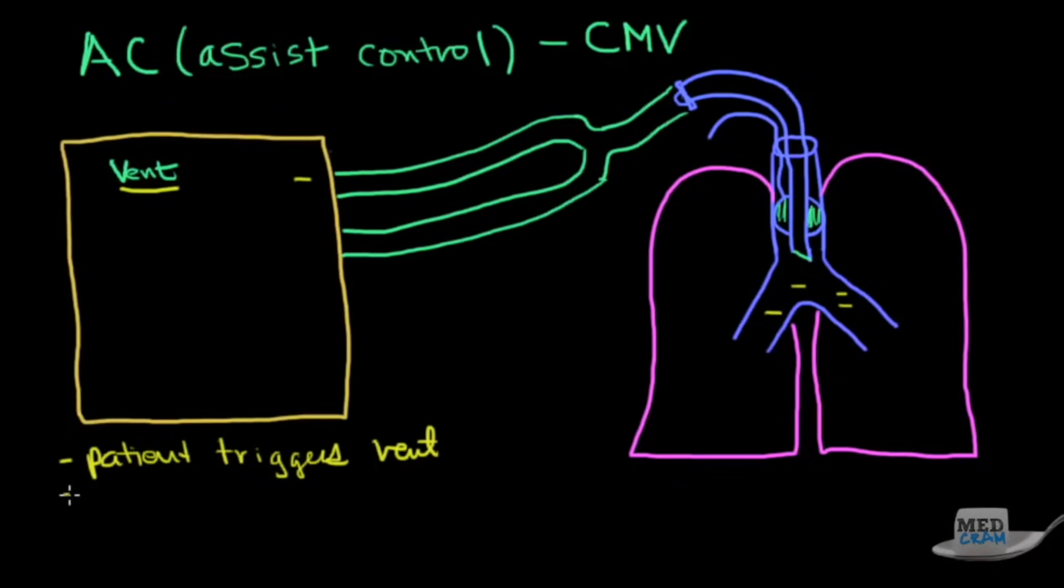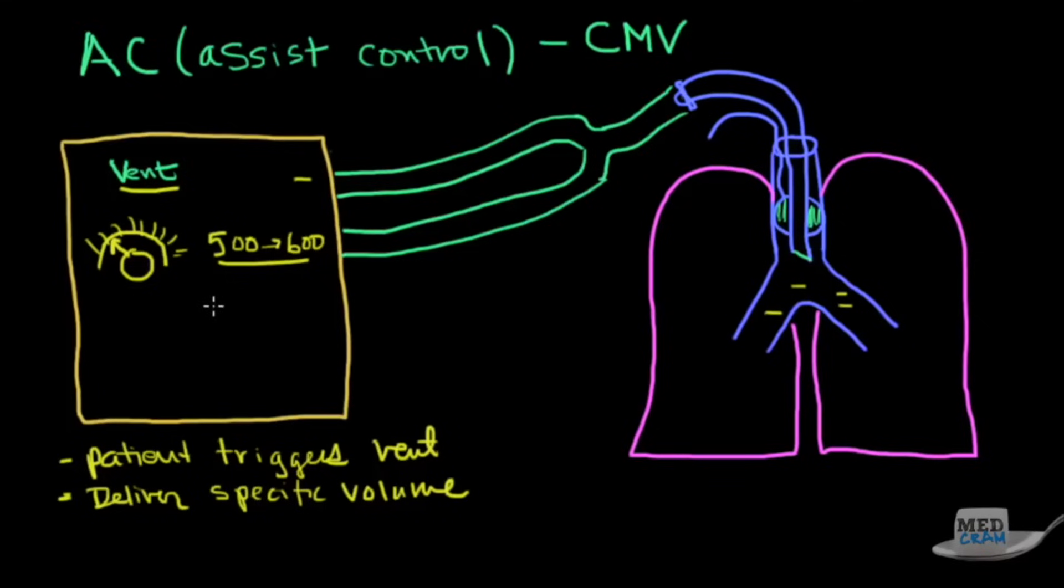As soon as the ventilator picks up on that negative pressure it's going to deliver a specific volume. There's an actual dial on here where you can turn the knob to a specific volume or you can enter it in. That volume can be anywhere from 500 cc's all the way up to 600 cc's usually. The ideal way of ventilating somebody would be around 8 milliliters per kilogram ideal body weight. Whatever that volume is, it's going to deliver that specific volume in AC mode ventilation.